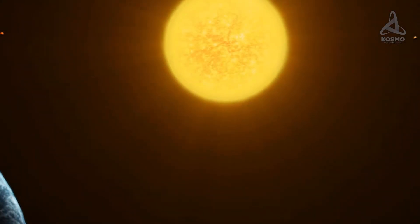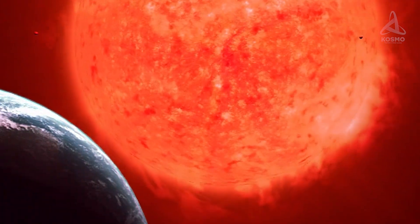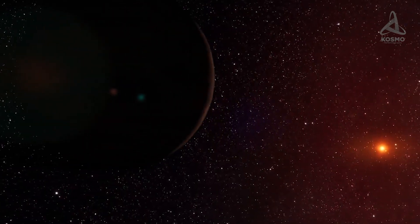When a main sequence star depletes most of its hydrogen supply, it starts to expand and cool off. With time, it ends up as a red giant.